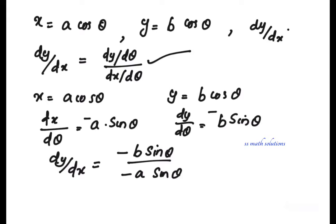That is, dy by d theta is minus b sin theta divided by dx by d theta which is minus a sin theta. The minus signs cancel and sin theta cancels, so we get b by a as the answer. This is the steps to find the differentiation in parametric equations.